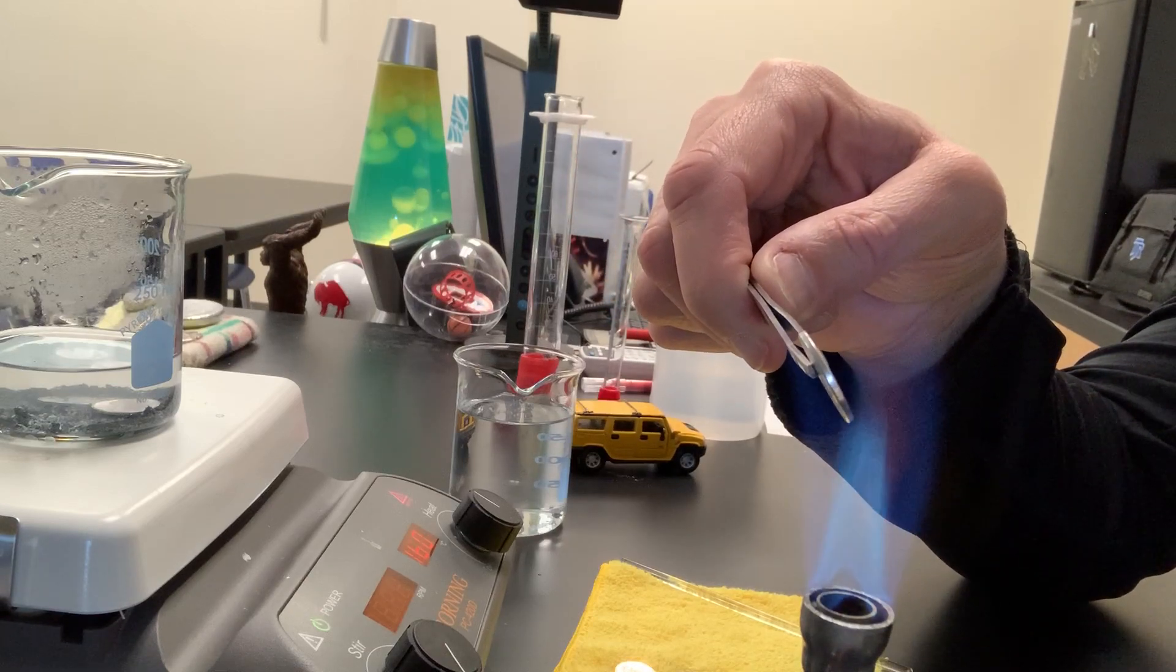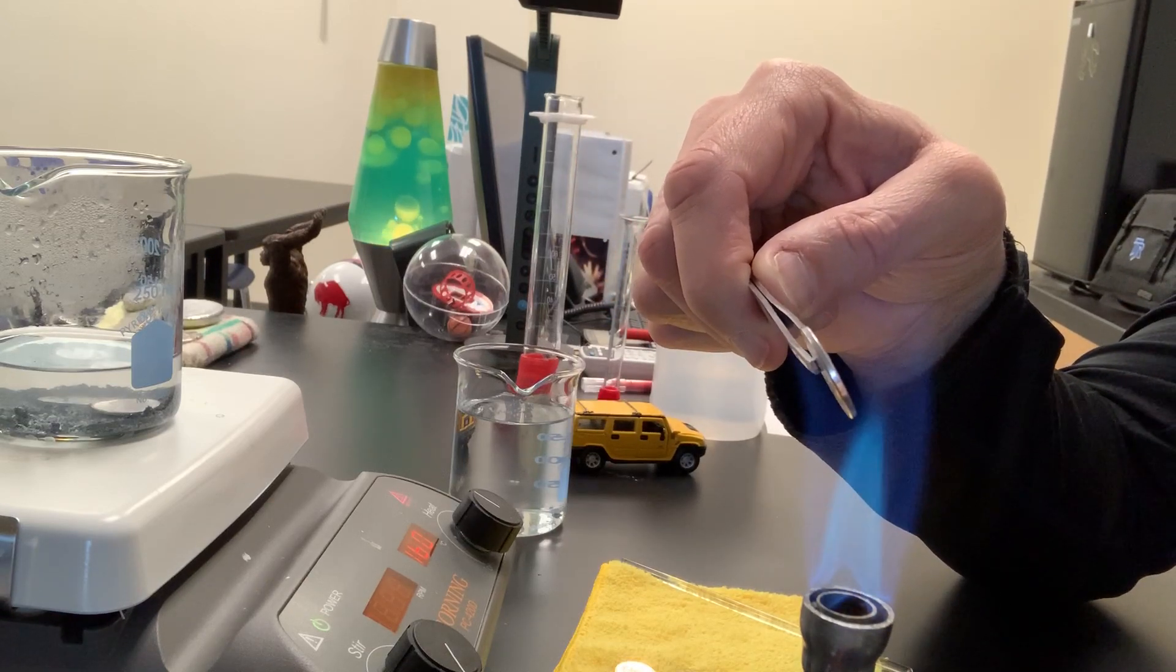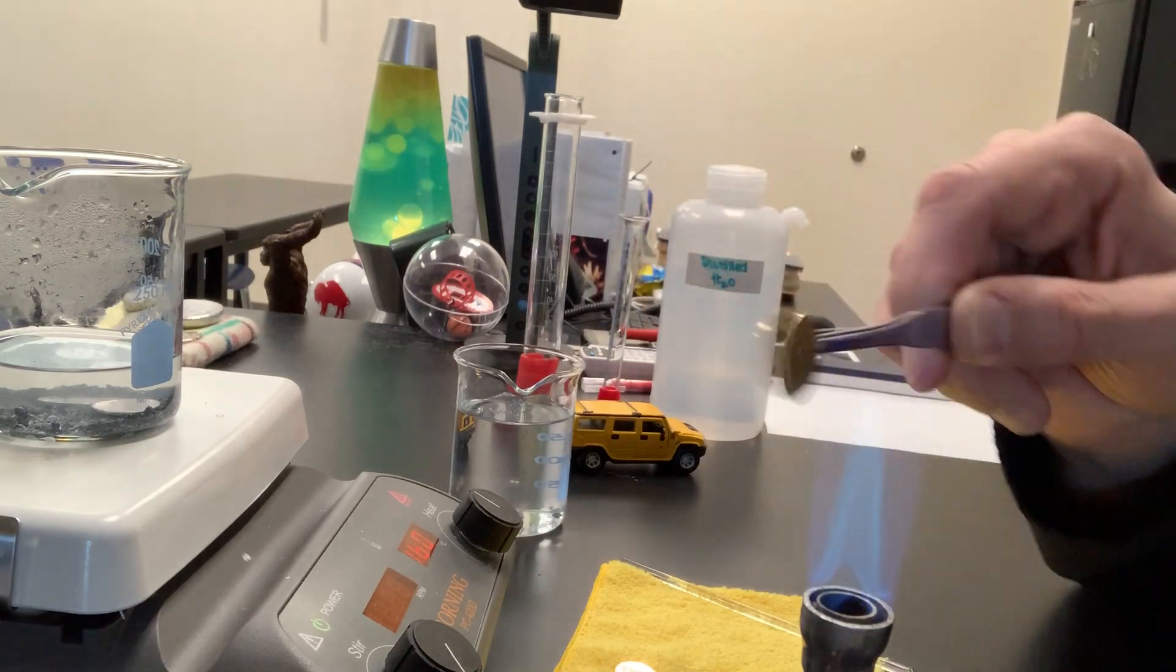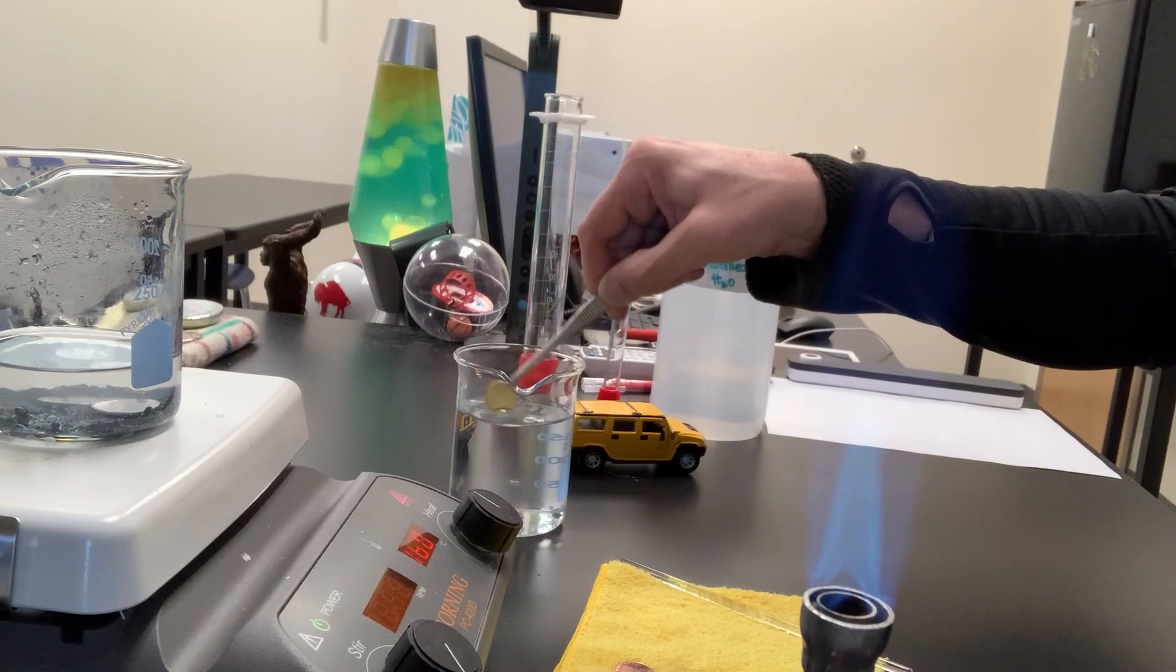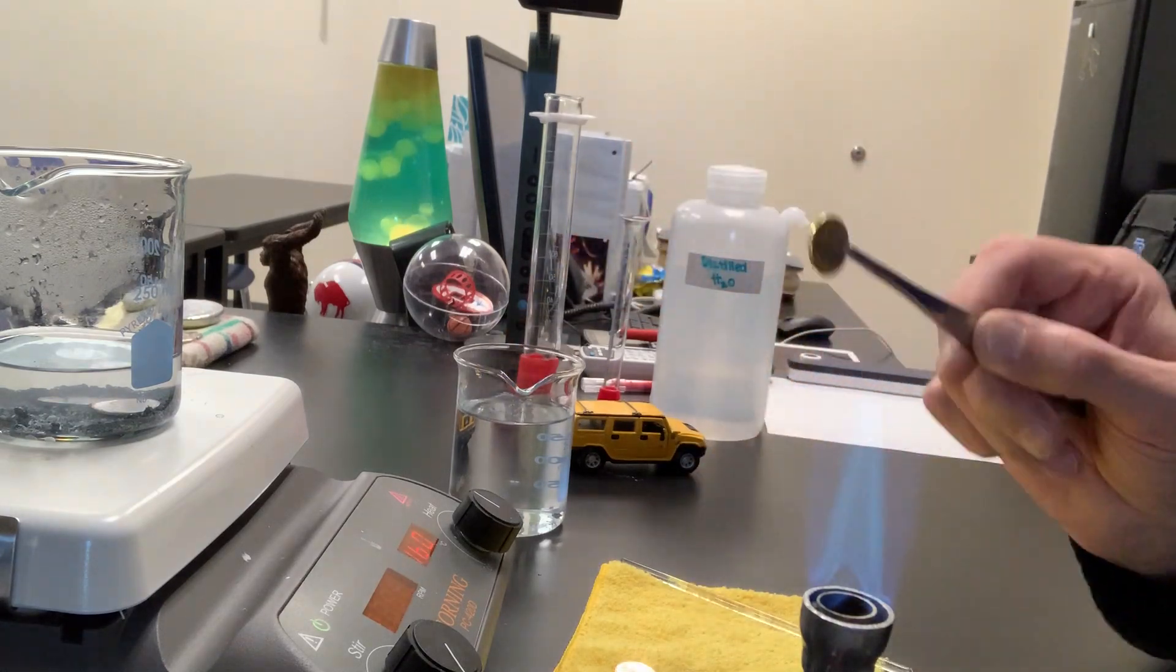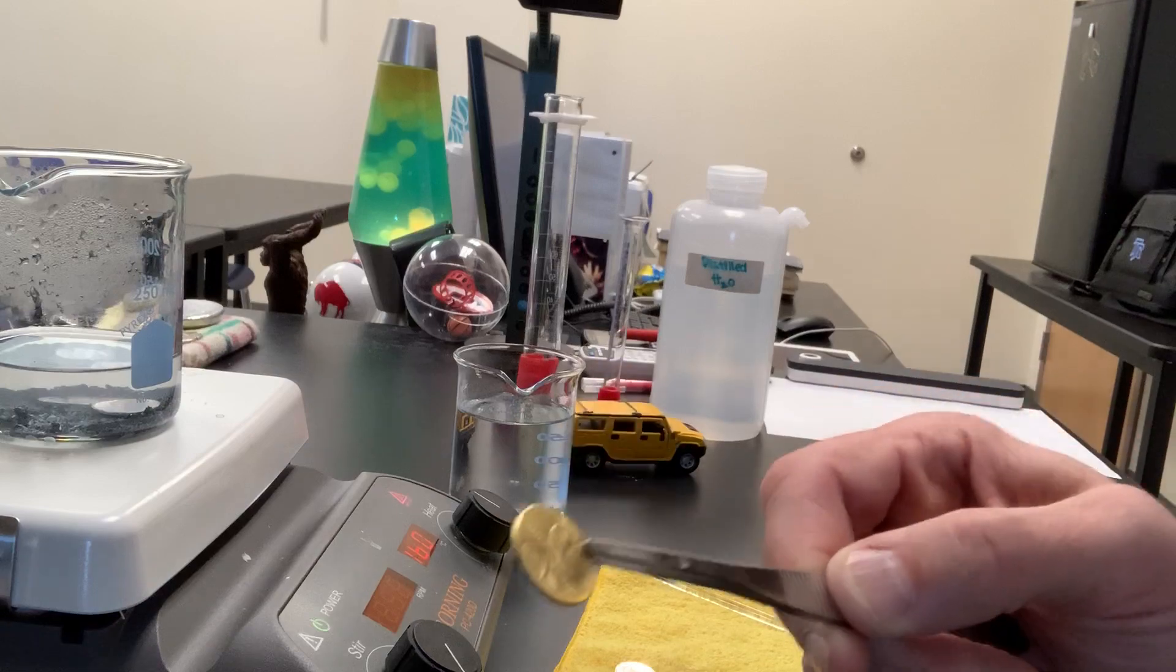We'll place it right in there, and as soon as I see a color change I want to take it out of the flame, which I just did now, and quench it in distilled water. I've made a brass penny, a brass-coated penny.